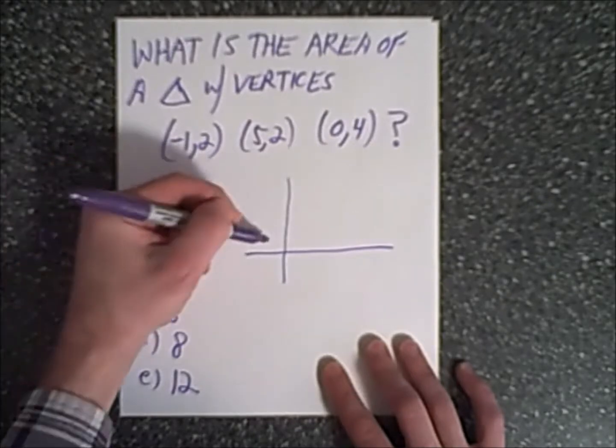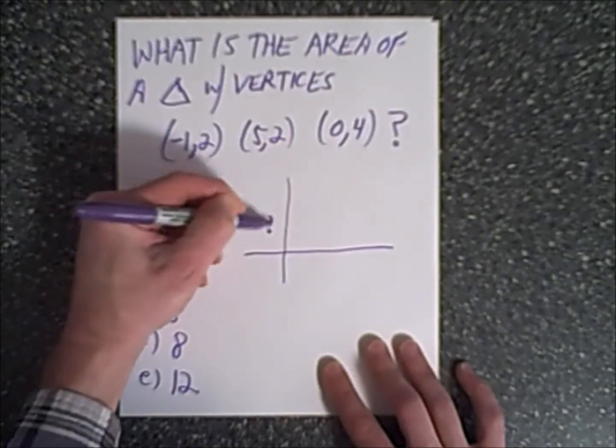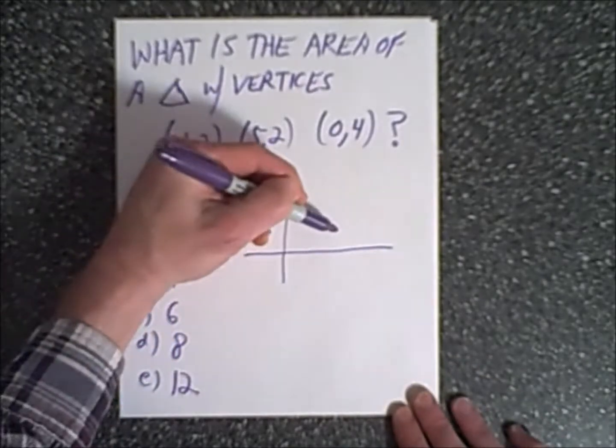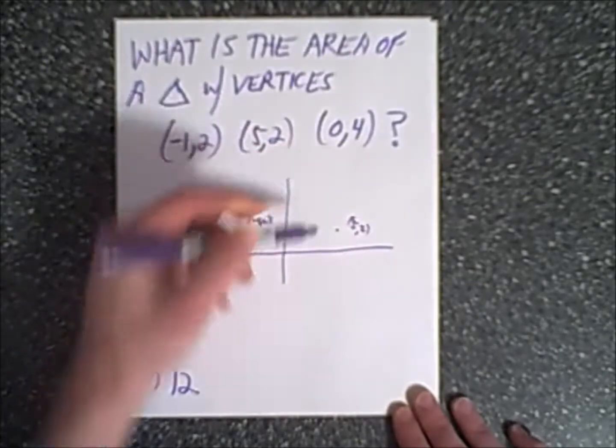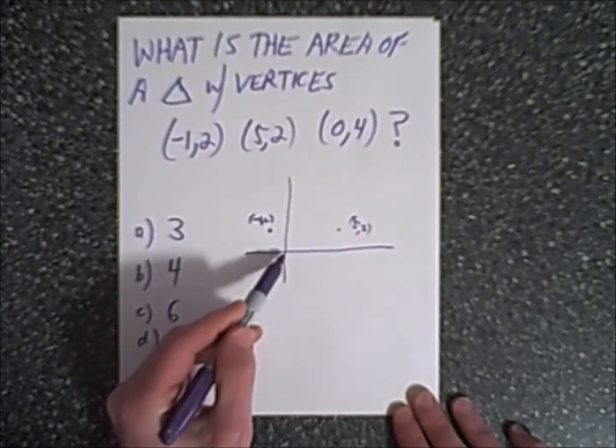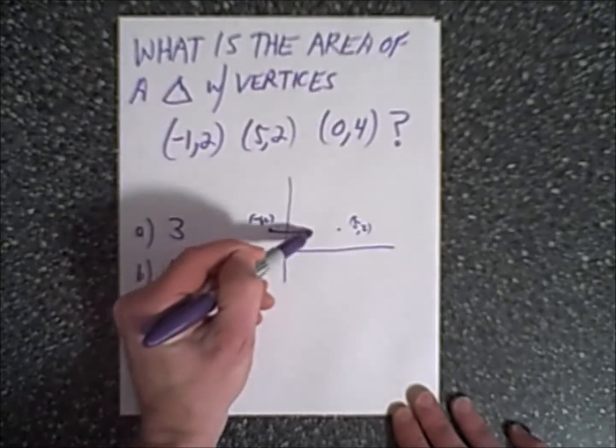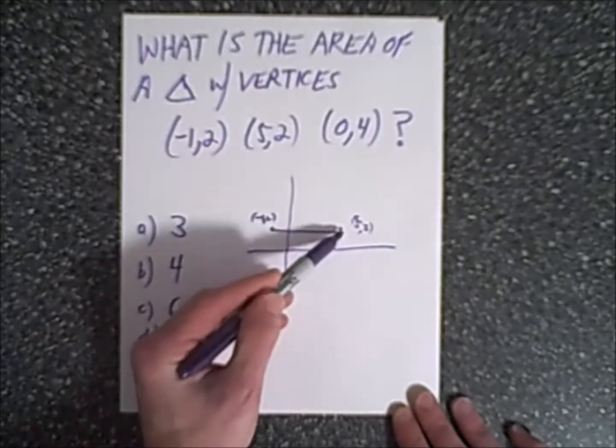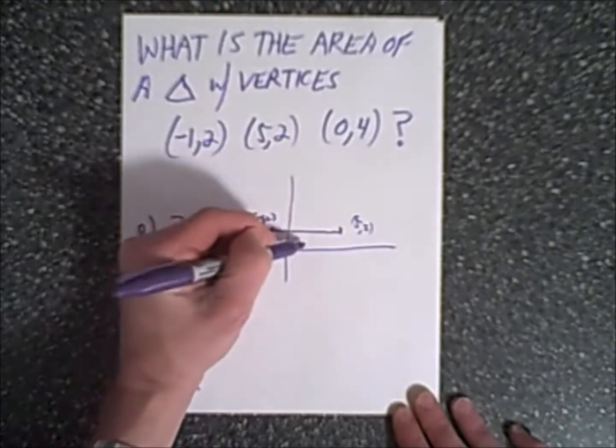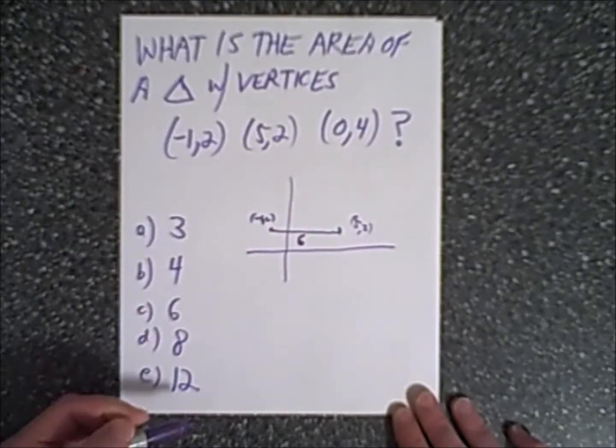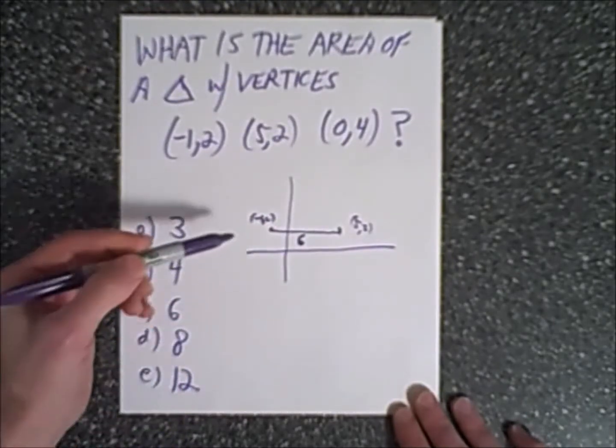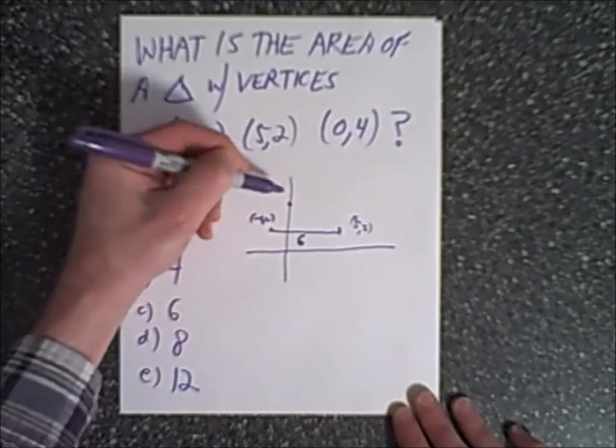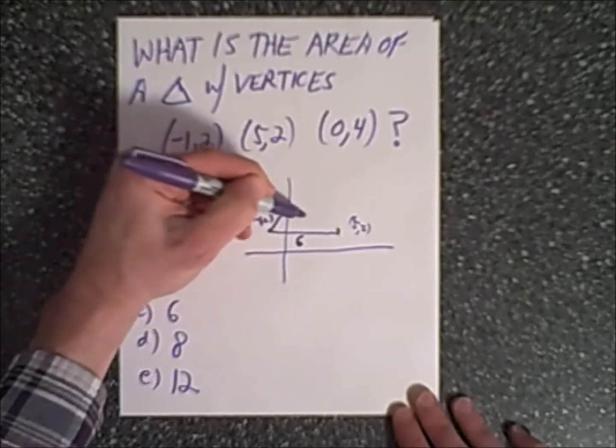Negative 1, 2 would be up here. The next thing we do is 5, 2 would be about right here. Since they're both two units above the x-axis, we can draw a horizontal line connecting them. We can also recognize from negative 1 to 5 is going to be 6 units, so that's how long the base of our triangle will be. Our third vertex is going to be at 0, 4, right about here, and so this is the triangle we have.